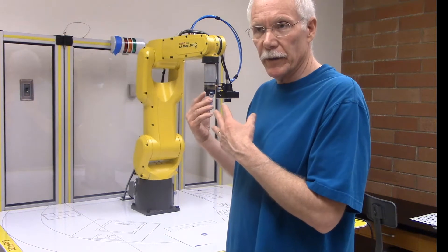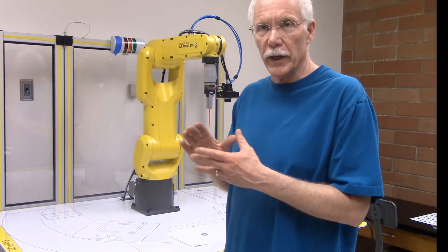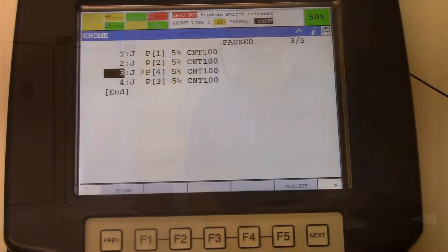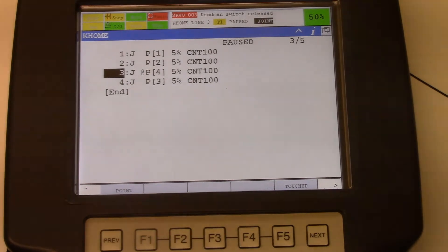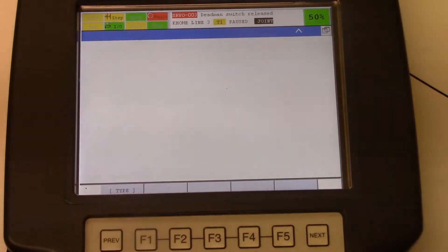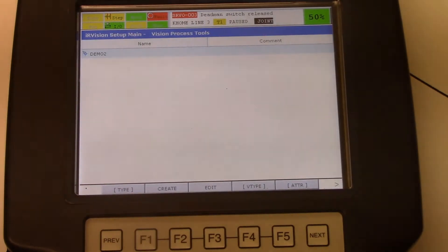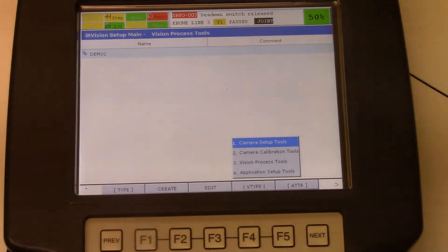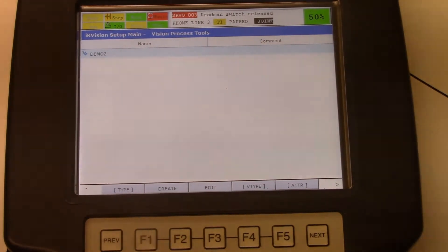First we're going to start by setting up the process. We're going to teach the robot what to look for and then we'll have a look for that. To create a visioning process, we'll go to the main menu, select 8 for IR vision. And then under type, we're going to select the third option, which is vision process tools. And we're going to create a new process. So select F2 create.